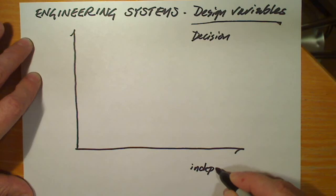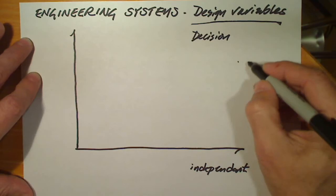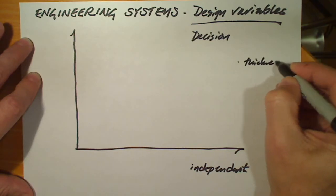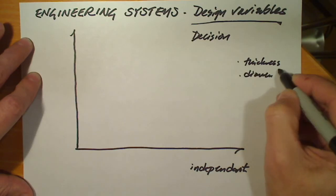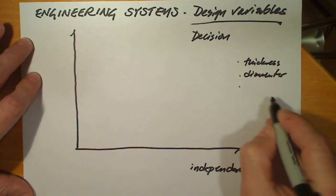In a Cartesian coordinate system, those would be the independent variables. Examples would include thickness, for example, of a reactor wall or pavement. They might include diameter, like of a pipe.